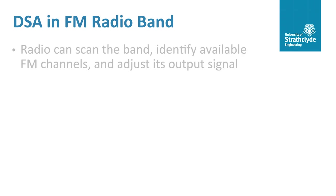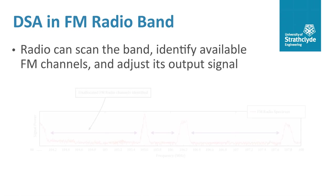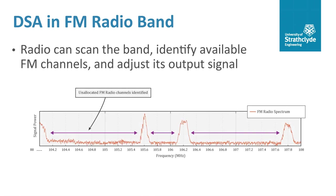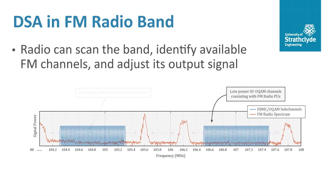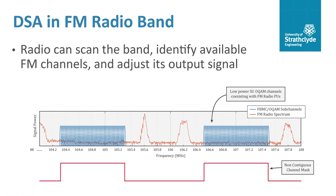The radio we developed was designed to be capable of automatically scanning the FM band, identifying available channels, and dynamically adjusting its output signal to mould itself around the FM radio primary users, all in real time. It does this by reconfiguring its non-contiguous channel mask, and it uses guard bands to ensure that it will cause no audible interference to the FM radio stations.